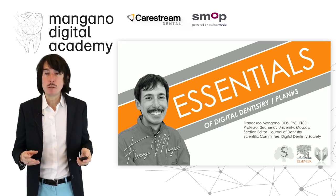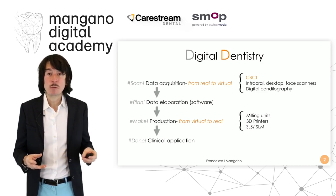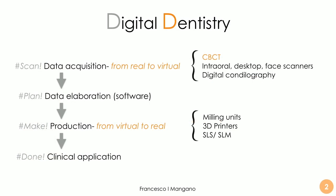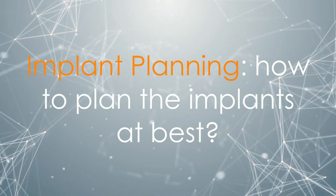We are talking about planning — the second phase of digital dentistry. After data acquisition, we need to plan everything properly inside a software, in this case a guided surgery software. We acquire data using different scanners, including the intraoral scanner, then we go from real to virtual inside the guided surgery software, plan our implants, and proceed to production using milling units, 3D printers, and selective laser melting, then on to surgery and clinical application.